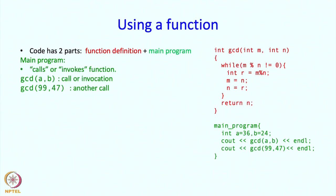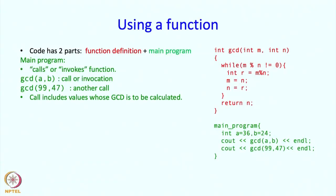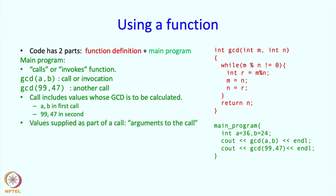In the next line, I am calling gcd again. This time the arguments 99 and 47 are passed directly. In general, the call includes the values whose GCD is to be calculated — a and b in the first call, and 99 and 47 in the second. The values supplied as part of the call are called arguments to the call.